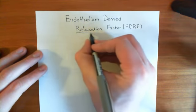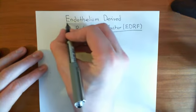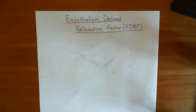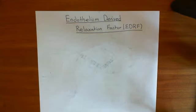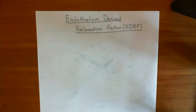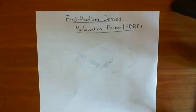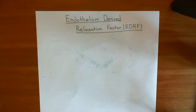So my plan for this video: firstly, I'm going to describe the structure of a blood vessel, just so that we're all on the same page. Then I'm going to describe the process of the endothelium being stimulated to release endothelium-derived relaxation factor, or nitric oxide, and then we're going to look at how it acts on the smooth muscle surrounding the endothelium to cause vasodilatation — to relax the smooth muscle and cause the lumen of the blood vessel to increase. We'll then look at how this explains the acetylcholine paradox.